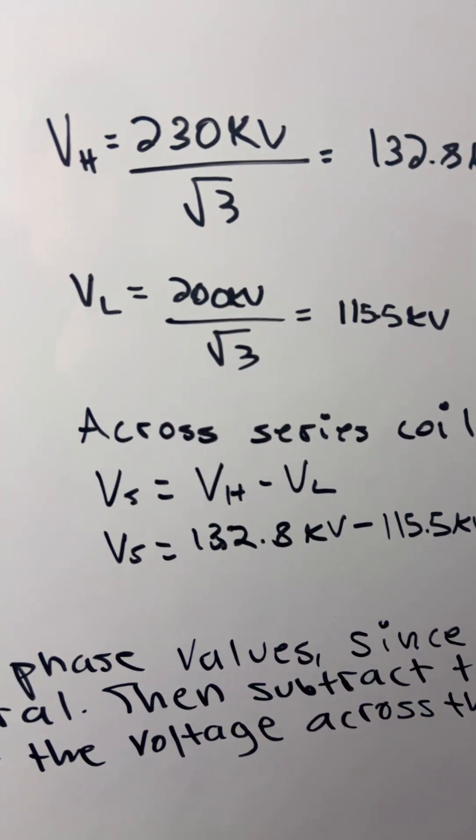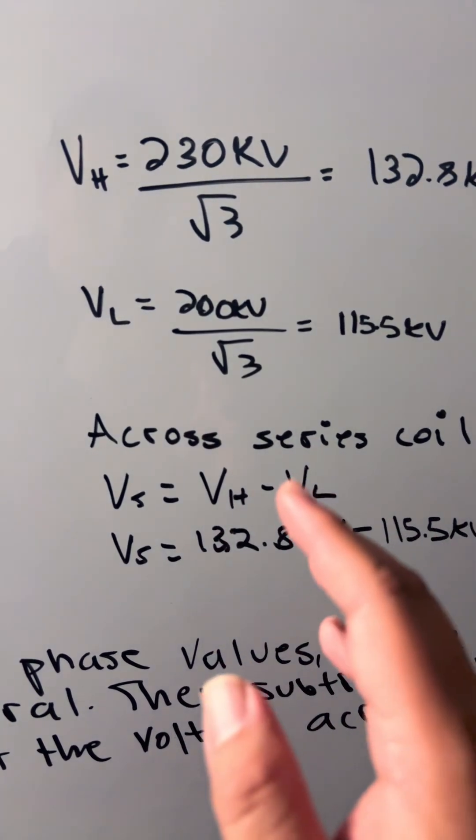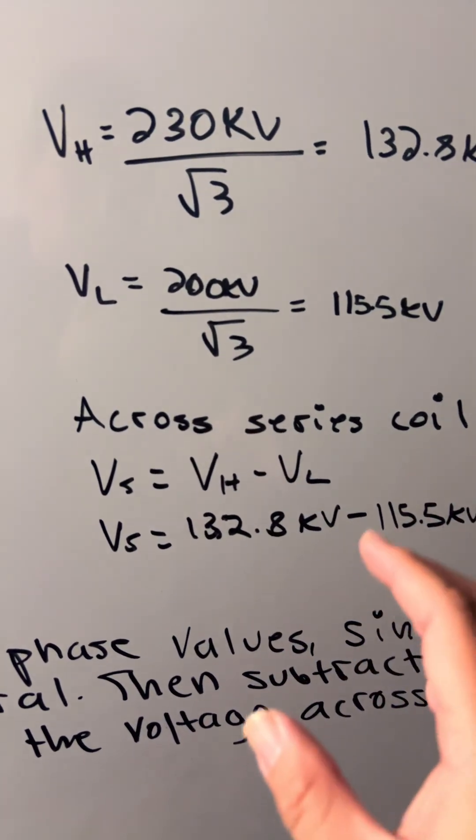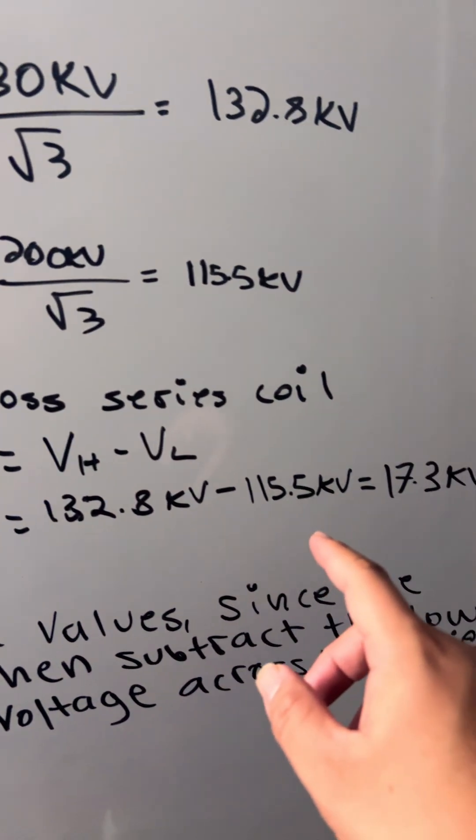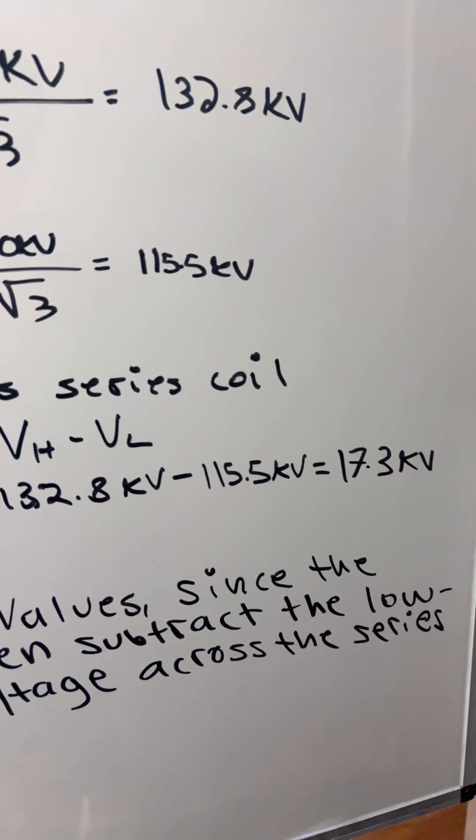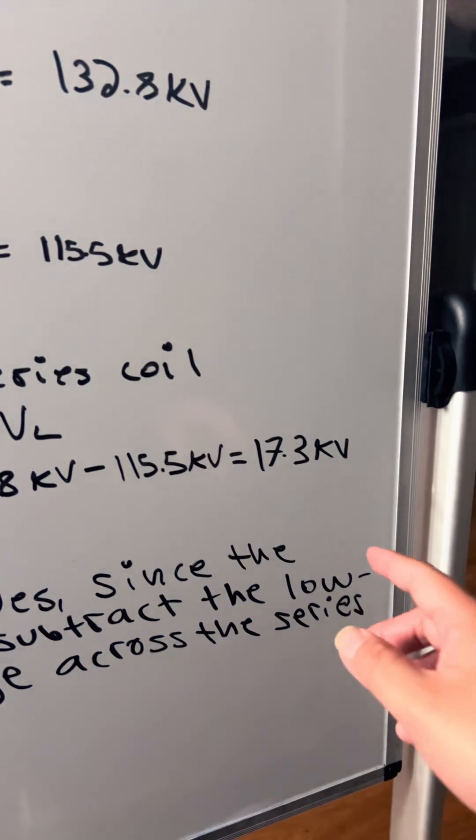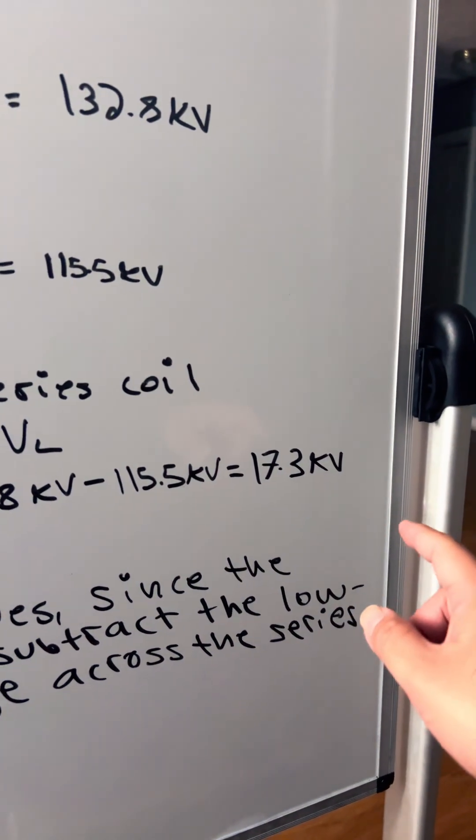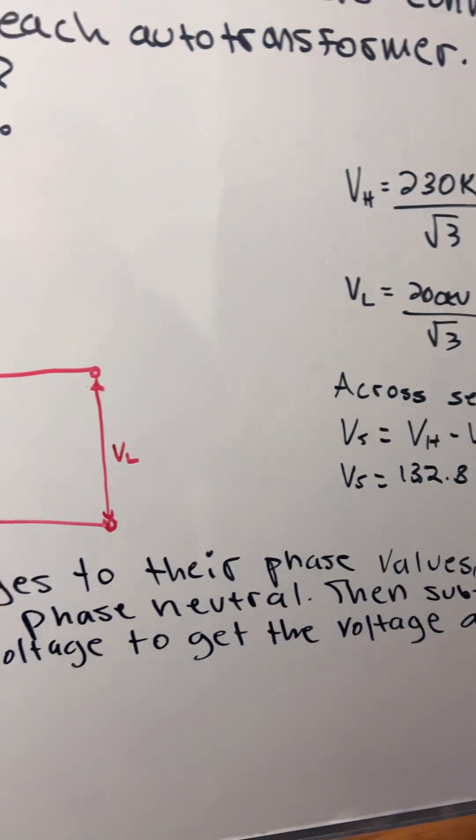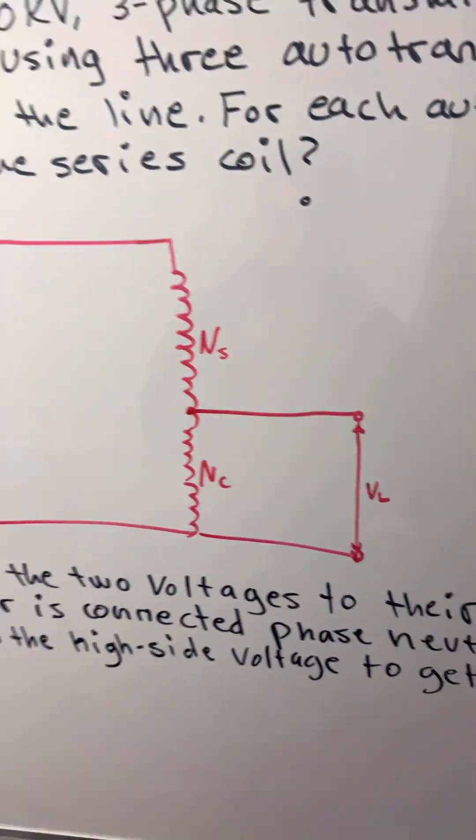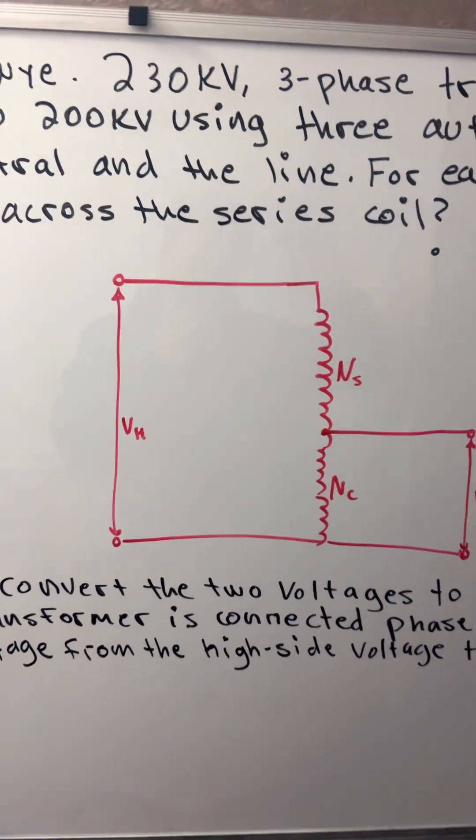So the voltage in the series coil is 132.8 kV minus 115.5 kV, which gives us 17.3 kV. That's the voltage across the series coil. If you like this type of content, give it a like.